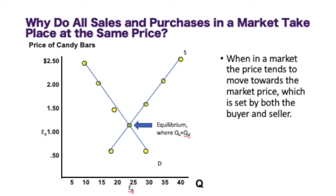There are three questions we need to answer: Why do all sales in a market take place at the same price? Why does the market price fall if it is above the equilibrium price? And why does the market price rise if it's below the equilibrium price — in other words, why does price fall in a surplus and rise in a shortage? In a market, price tends to move towards equilibrium, set by both buyer and seller. The invisible hand that Adam Smith described pushes buyers to buy at certain price points and pushes sellers to lower their prices.